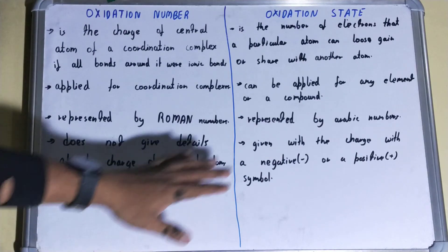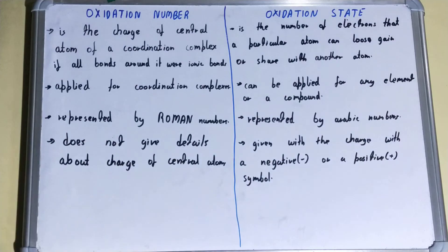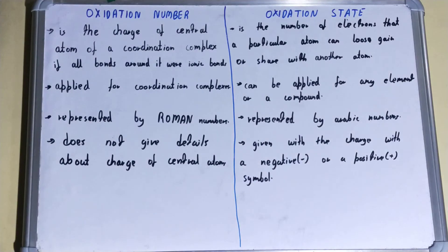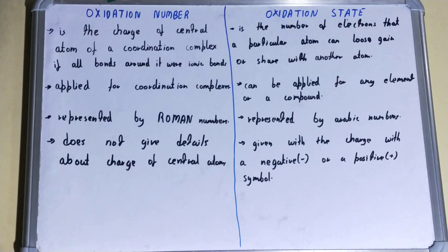But if we talk about the oxidation state, it is given with the charge with a negative or positive symbol. So in the case of oxidation state, it also tells whether the charge is negative or positive. So this was all about the difference between oxidation number and oxidation state. If you like the video, please hit the like button, subscribe, and thanks for watching.